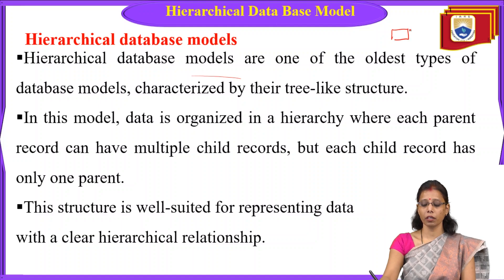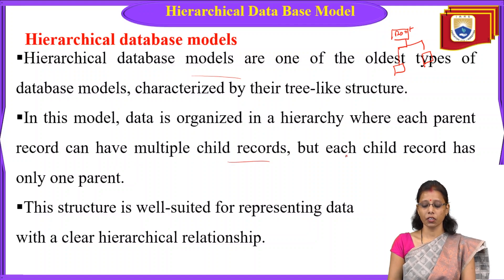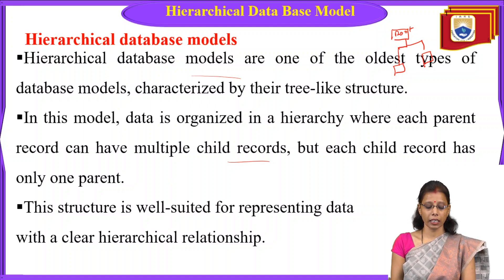In this model, there is one main root, from which sub-branches extend. Data is organized in a hierarchy where each parent record can have multiple child records, but each child record has only one parent. This structure is well-suited for representing data with a clear hierarchical relationship.